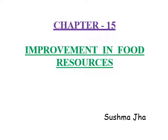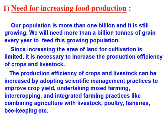Let us start a new chapter: Improvement in Food Resources. Our population is growing beyond 1 billion and it is still a continuous process. We will need more than a billion tons of grain every year to feed this growing population. Since increasing the area of land for cultivation is limited, it is necessary to increase the production efficiency of crops and also livestock.